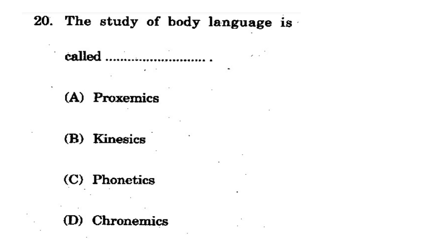Question 20: The study of body language is called what? In an interview panel, faculty members observe your body posture, strength, and expressions. Options include phonetics, Kinesics, and Chronemics. The correct option is B - Kinesics. The study of body language is called Kinesics.